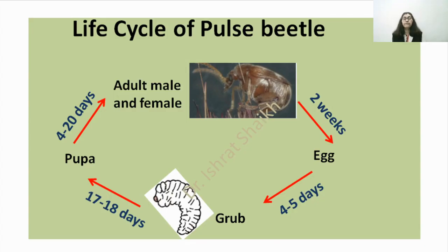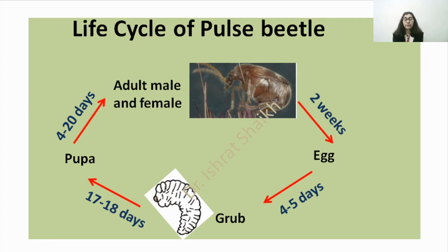In the life cycle diagram, you can see the adult male and female copulate, after which the female lays eggs. The adult life period is 2 weeks. In 4 to 5 days the eggs hatch into grubs, which feed on the inside of the seed for 17 to 18 days and then develop into pupa. After 4 to 20 days, depending upon environmental conditions, adults emerge from the pupa.